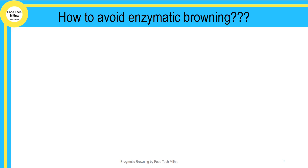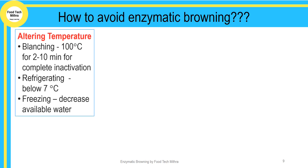The first method is by altering the temperature. This can be done either by blanching at 100 degrees Celsius for 2 to 10 minutes for complete inactivation of the enzyme, or by refrigerating below 7 degrees Celsius, or by freezing the product, which decreases the available water.